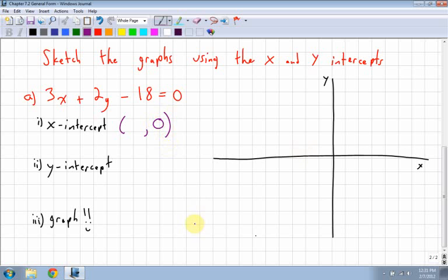So what happens? I go up here, I put 0 into y, so that gets rid of it, because 2 times 0 is 0. I'm left with 3x minus 18 equals 0.